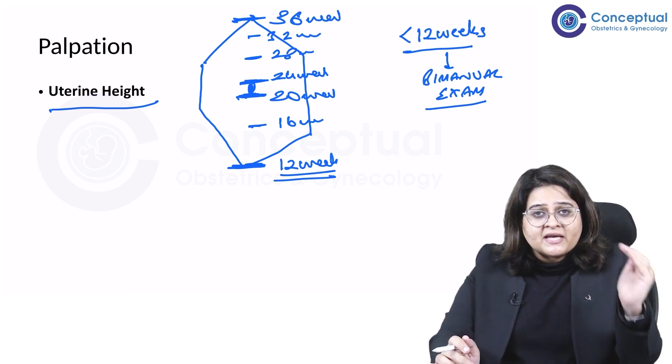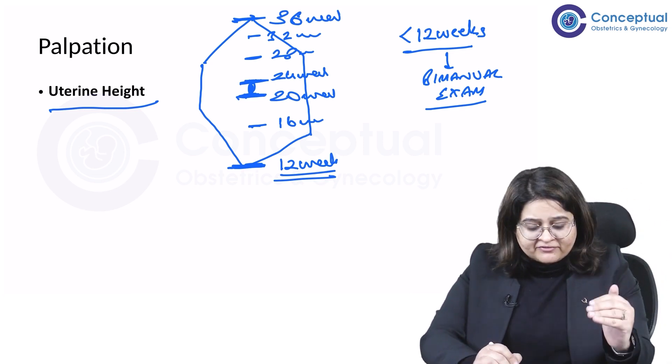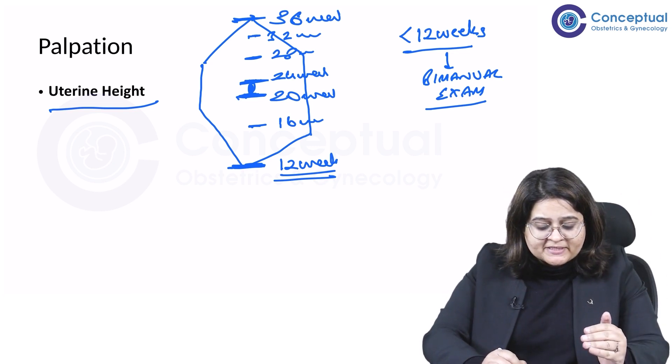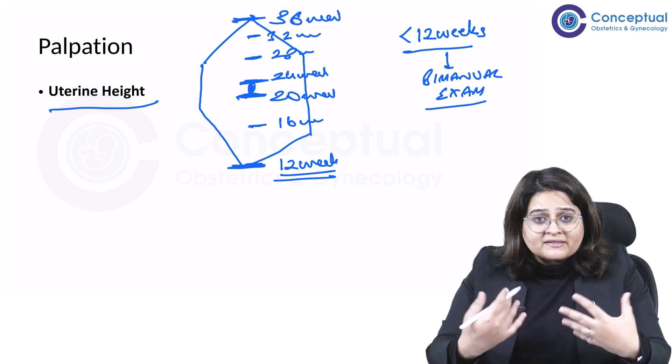Lower border of the umbilicus 20 weeks, upper border of umbilicus 24 weeks, xiphisternum 36 weeks. In between we can divide two further divisions: 28 weeks and 32 weeks.